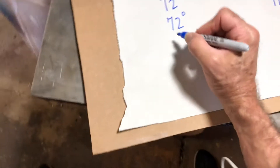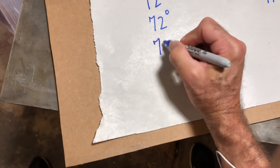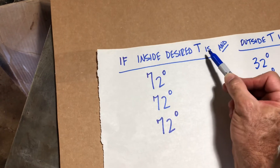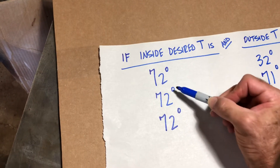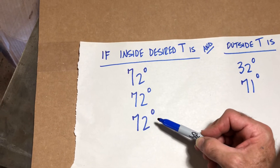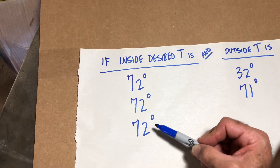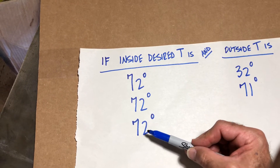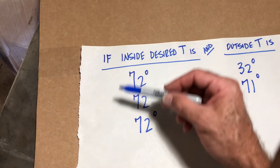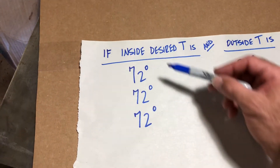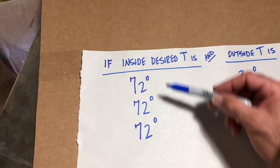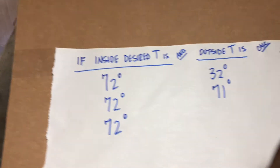Let's say our indoor temperature is 72 degrees — our desired indoor temperature. We're going to use 72 degrees. Now grandma might want it to be 85 degrees and you might want it to be 62 degrees, but generally when we do energy calculations in North America, we're saying most people like buildings to be about 72 degrees year round.